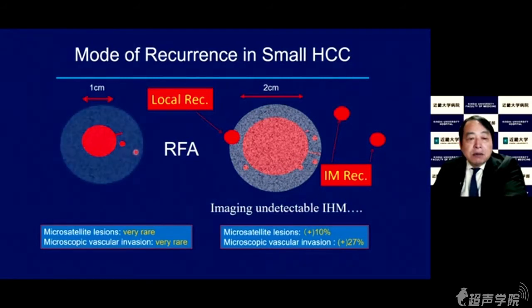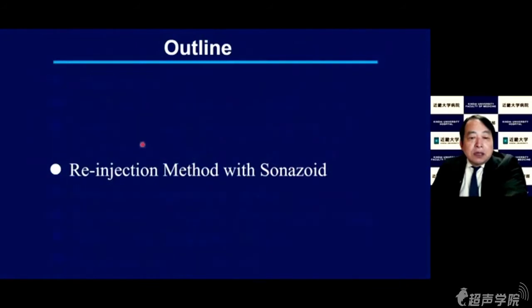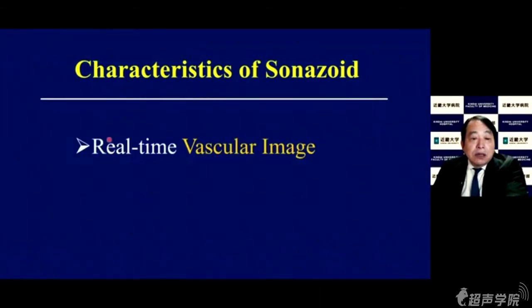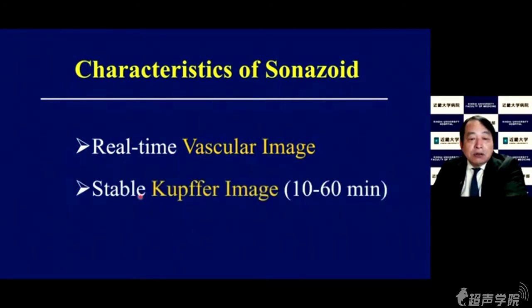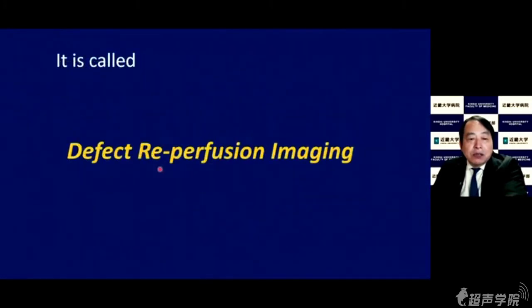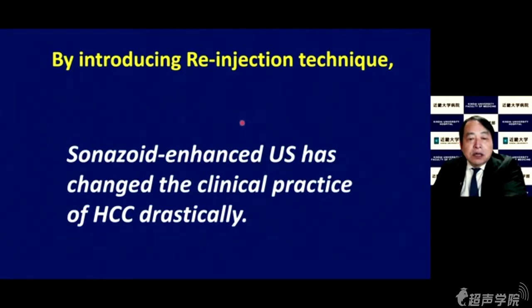I'll show you the reinjection method with Sonazoid. Sonazoid provides real-time vascular imaging and also stable Kupffer imaging lasting up to 60 minutes. Because of these favorable features, a breakthrough technique has been invented called Defect Reperfusion Imaging, or Reinjection Technique. By introducing this technique, Sonazoid-enhanced ultrasound has changed the practice of injection technique.